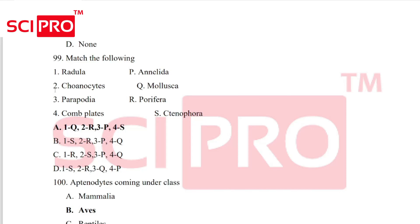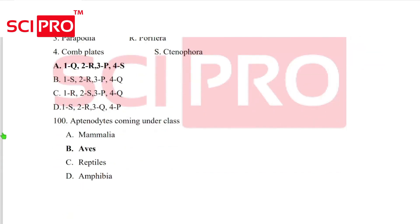Question number 99, match the following. Radula, Mollusca. Cnidocytes, Cnidaria. Parapodia, Annelida. Comb plates, Ctenophora. Question number 100, Aptenodytes coming under the class Aves.